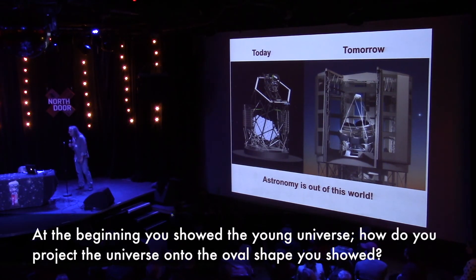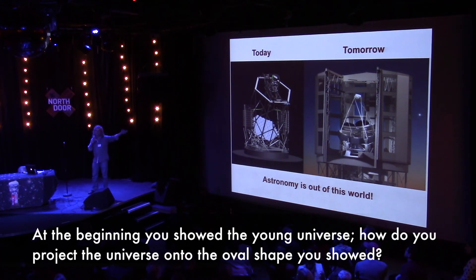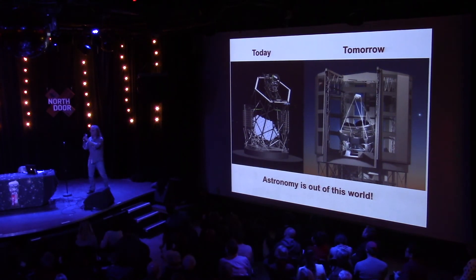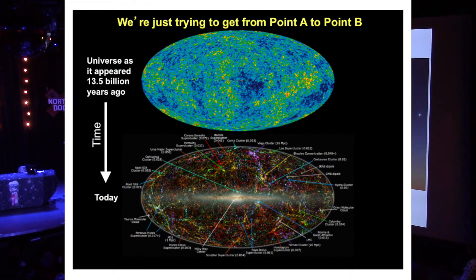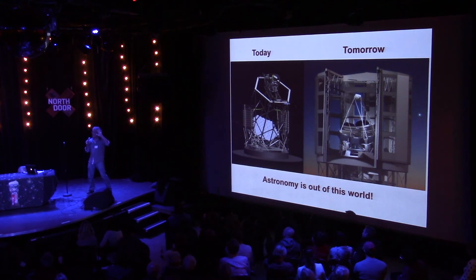Question: how do you project the baby universe image onto an oval? That is called an Aitoff projection. What you do is take that oval and wrap it around your head — that's the full sky. We're inside a sphere, and what you do is wrap that sphere around and project it onto a two-dimensional structure. All it is is a pictorial way to take a three-dimensional structure that we're in and make it a two-dimensional image you can put on a screen.